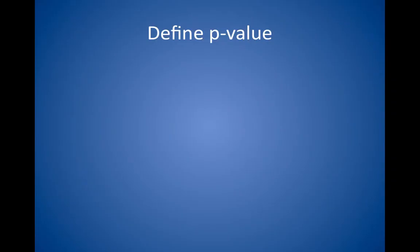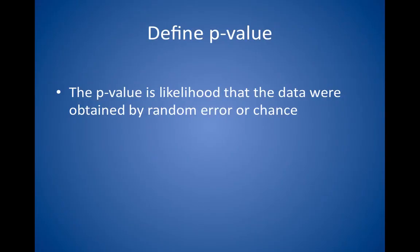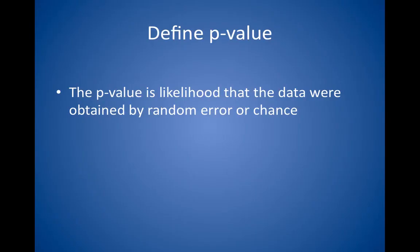Define p-value. The significance of the p-value is high yield on the Step 2 exam. If p is less than 0.05 for a set of data, there is less than a 5% chance that the data were obtained by random error or chance. If p is less than 0.01, the chance is less than 1%. For example, if the blood pressure in a control group is 180/100 mmHg but falls to 120/70 mmHg after drug X is given, a p-value less than 0.10 means that the chance that this difference was caused by random error or chance is less than 10%, but the chance that the result is random and unrelated to the drug may be as high as 9.99%. A p-value less than 0.05 is generally used as a cutoff for statistical significance in the medical literature.